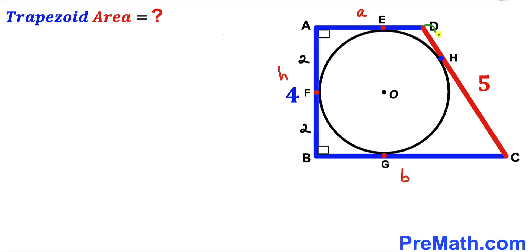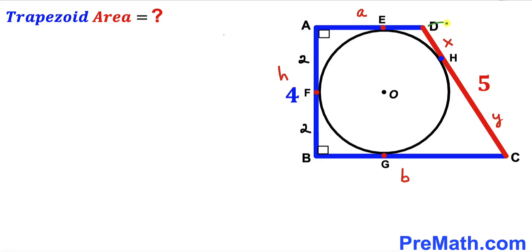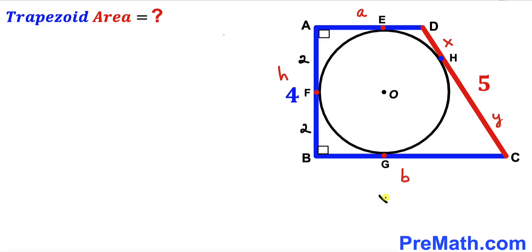Now let's focus on side CD. I'll label the segment DH as x and segment CH as y. Then the whole side CD equals x + y = 5. I'll call this equation number one: x + y = 5.